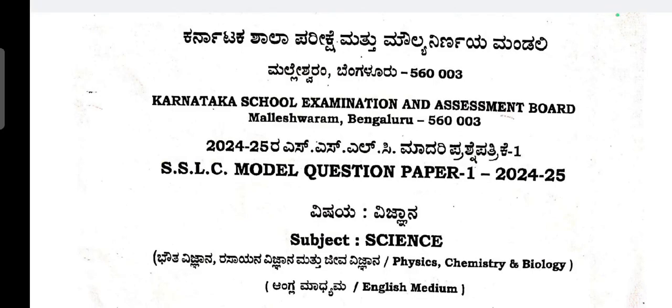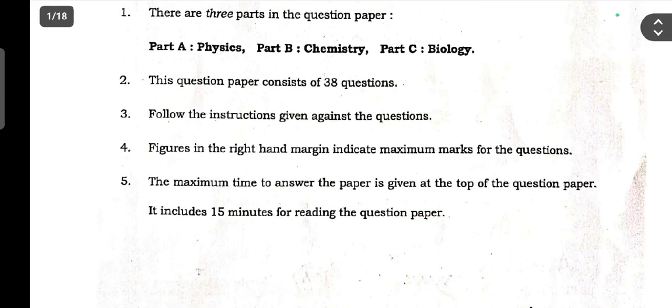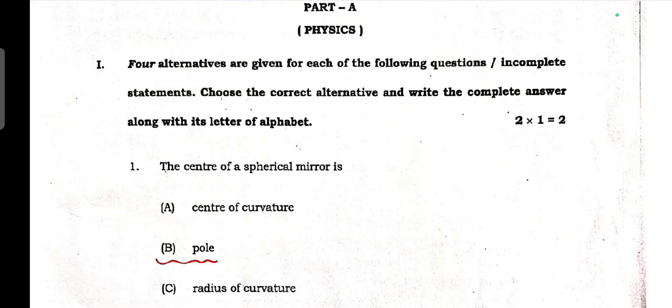Hello students, welcome back to my YouTube channel Supreme Learning Academy. This is Karnataka School Examination and Assessment Board, Maleshwaram Bangalore Model Question Paper 1 Science English. Subject code is 83E, time three hours fifteen minutes, marks is 80. General instructions are given - there are three parts: Part A, Part B, and Part C. So Part A is Physics. Let's get started. Before we start, if you are new to my channel, go subscribe, share to your friends if you want, and don't forget to hit the like button.